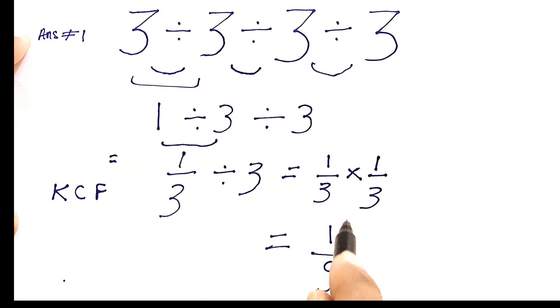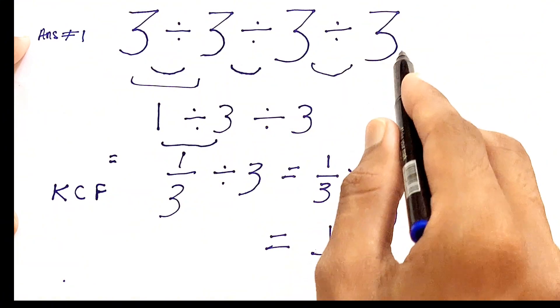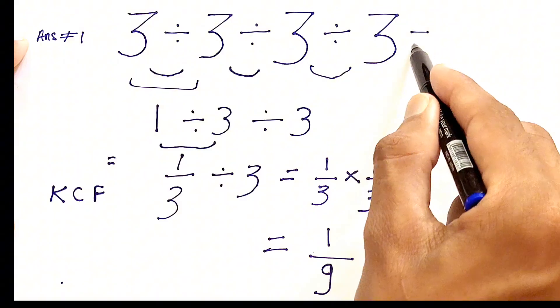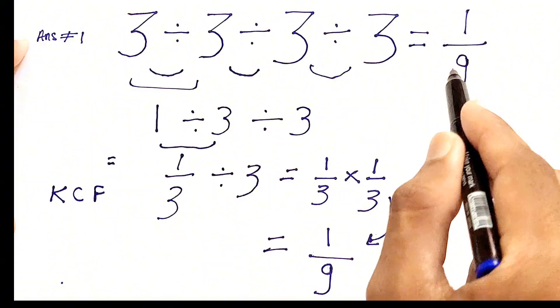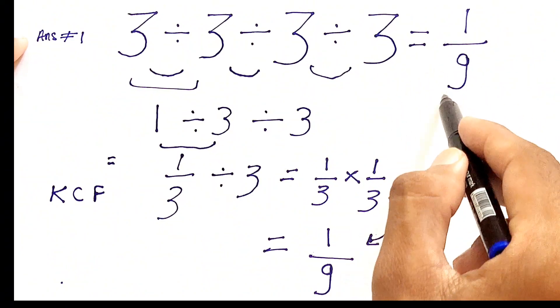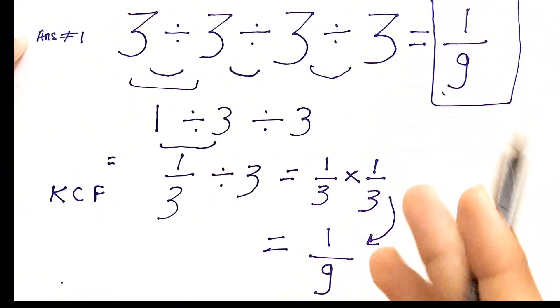So here is the simplified form of this expression, and the final answer to this expression 3 divided by 3 divided by 3 divided by 3 is 1 by 9. I know most people got confused in the KCF part, but it's a good method to solve this expression which looks easy but is not.